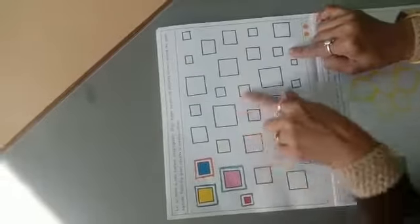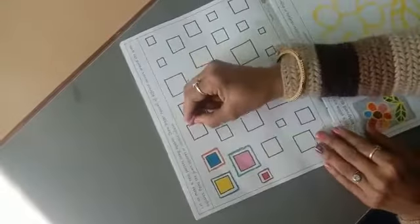Today we will draw page number 10 of this book. So page number 10 has squares given. You have to fill them with different colors. So how we will do, let's see.